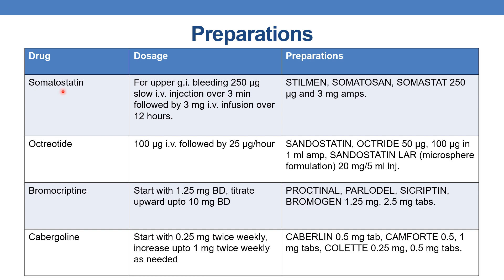The next drug is somatostatin. For upper GI bleeding: 250 mcg slow IV injection over 3 minutes followed by 3 mg IV infusion over 12 hours. Preparations are Stilamin, Somatosan, and Somatostat, available in 250 mcg and 3 mg ampoules.